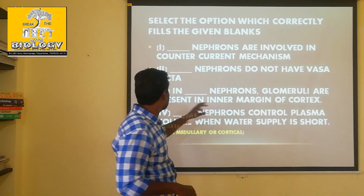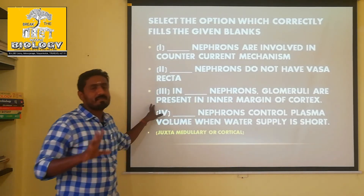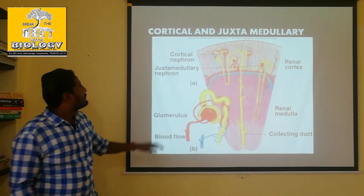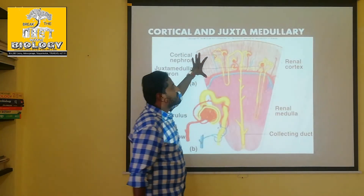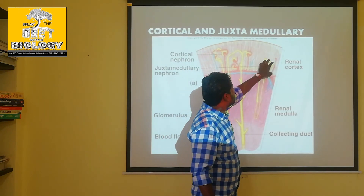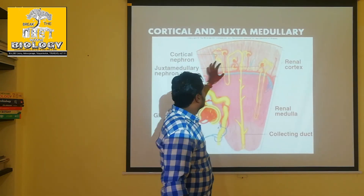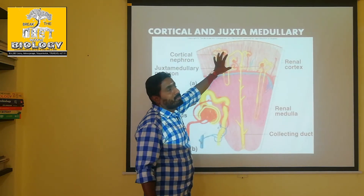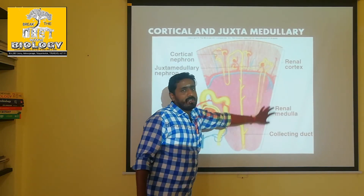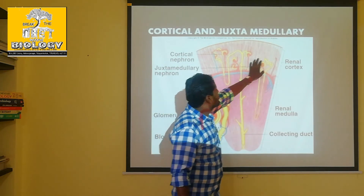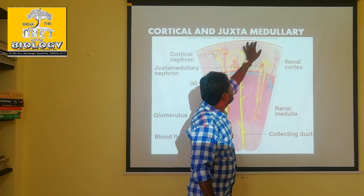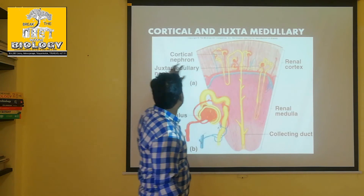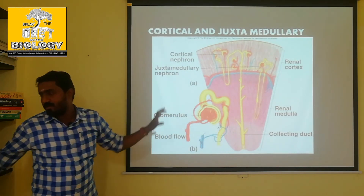Third blank: in dash nephrons, the glomeruli are present at the inner margin of the cortex. Looking at the diagram — this is the cortex region. The inner margin of the cortex is the juxtamedullary nephron, while the outer margin is the cortical nephron. So the answer is juxtamedullary nephrons.